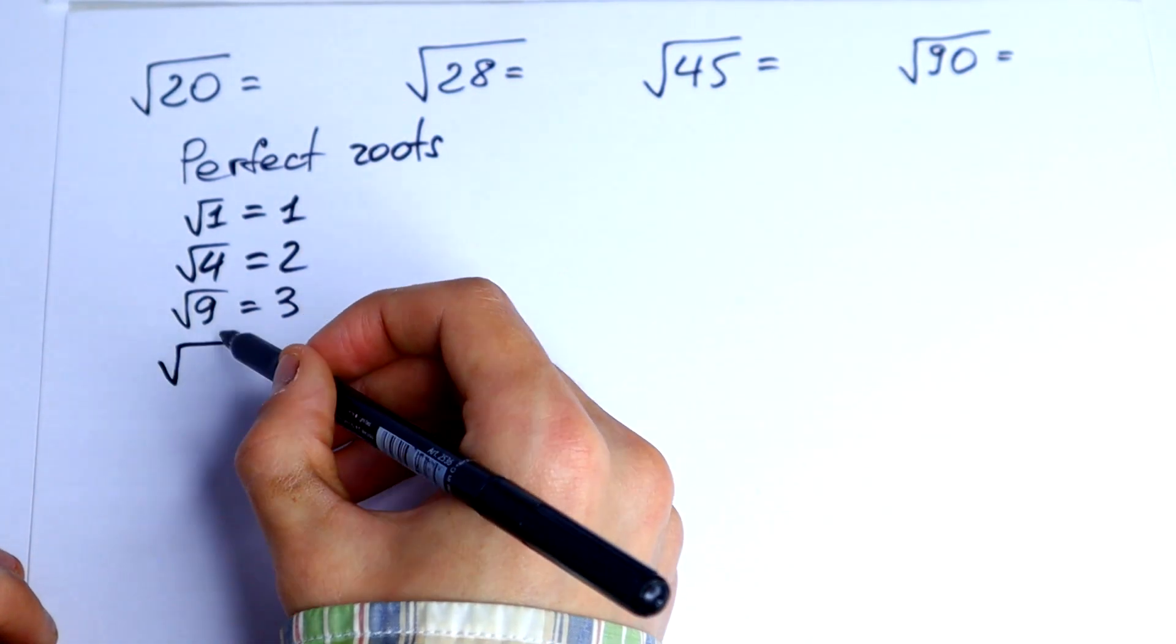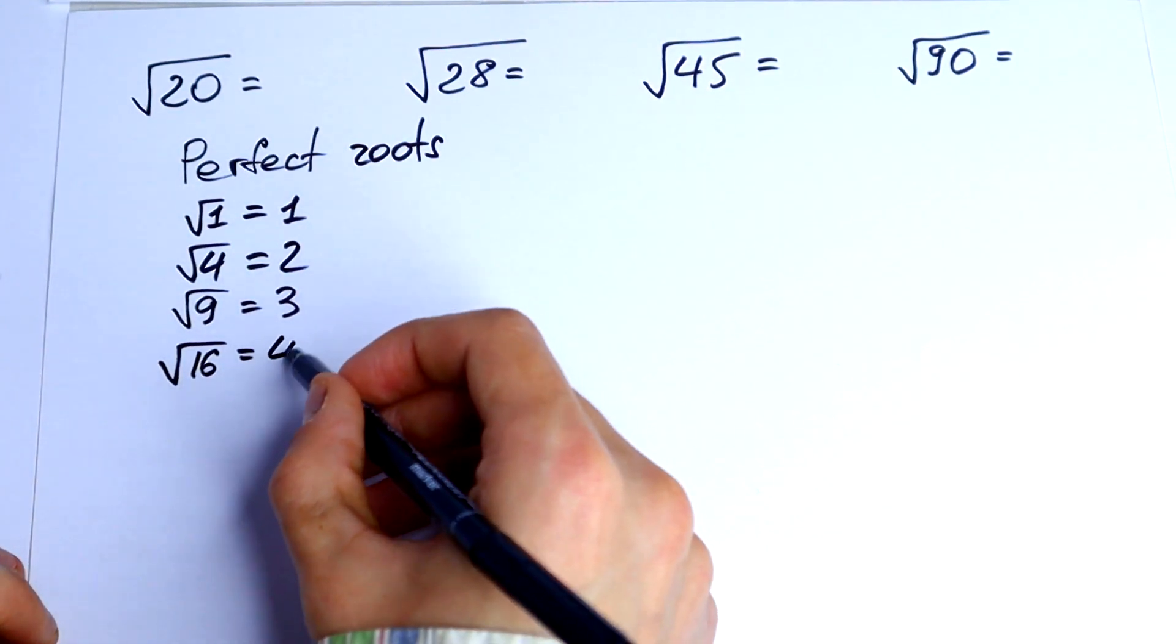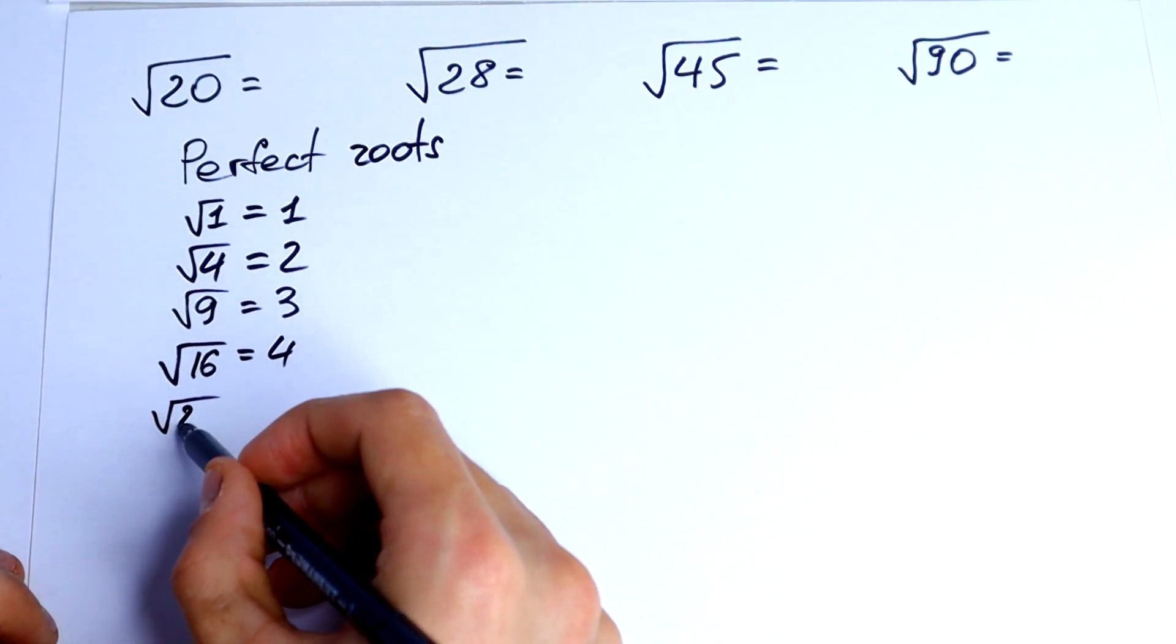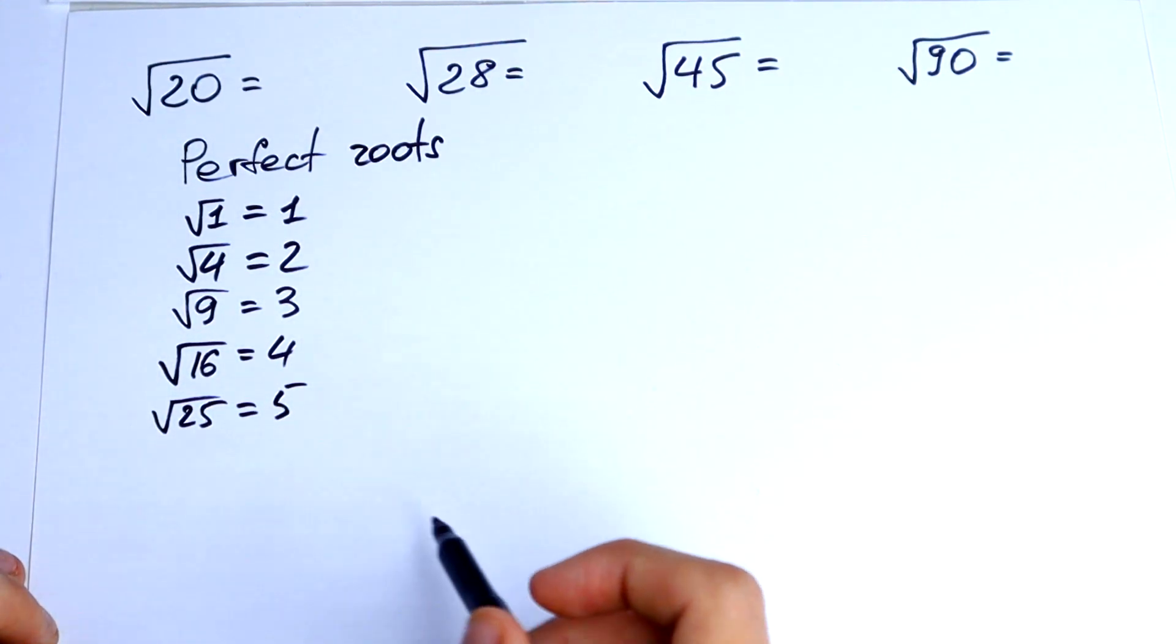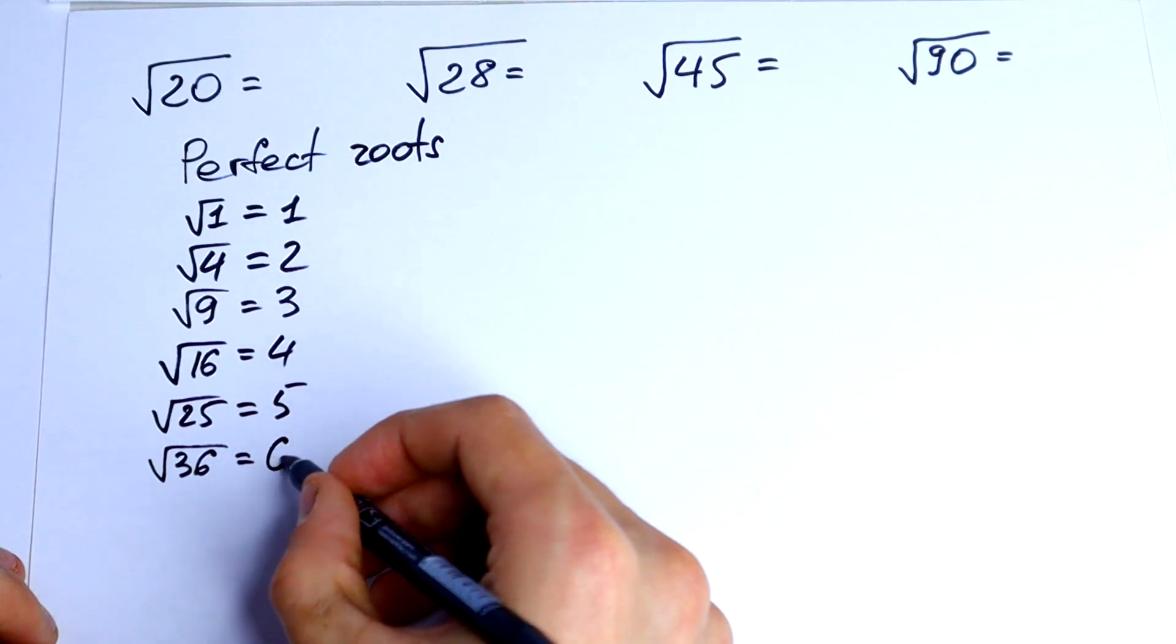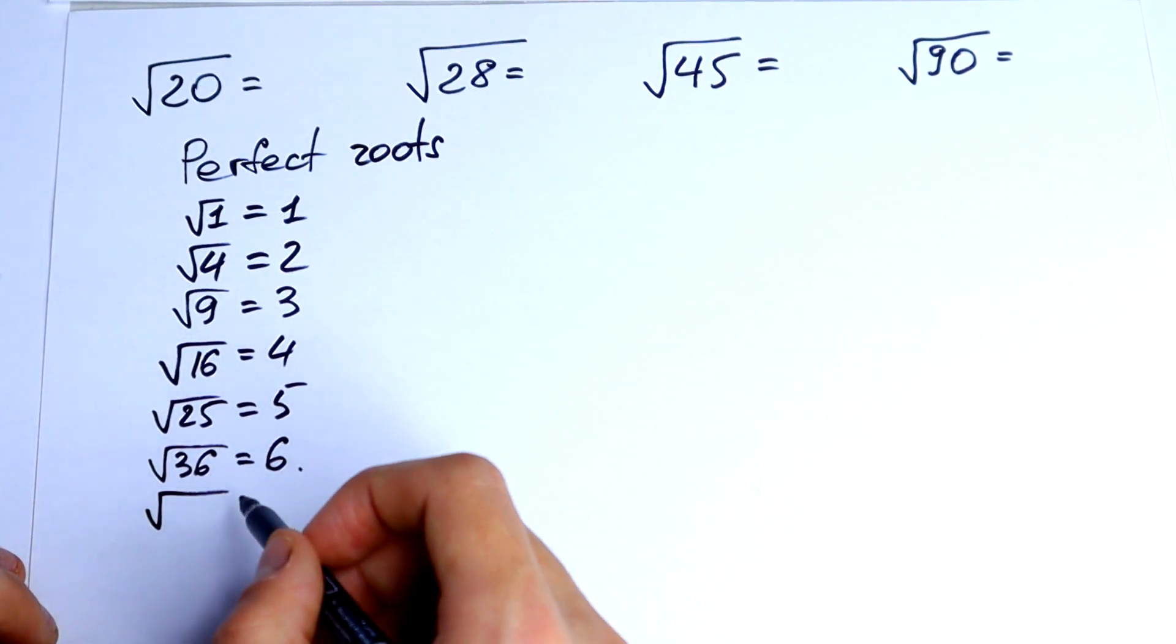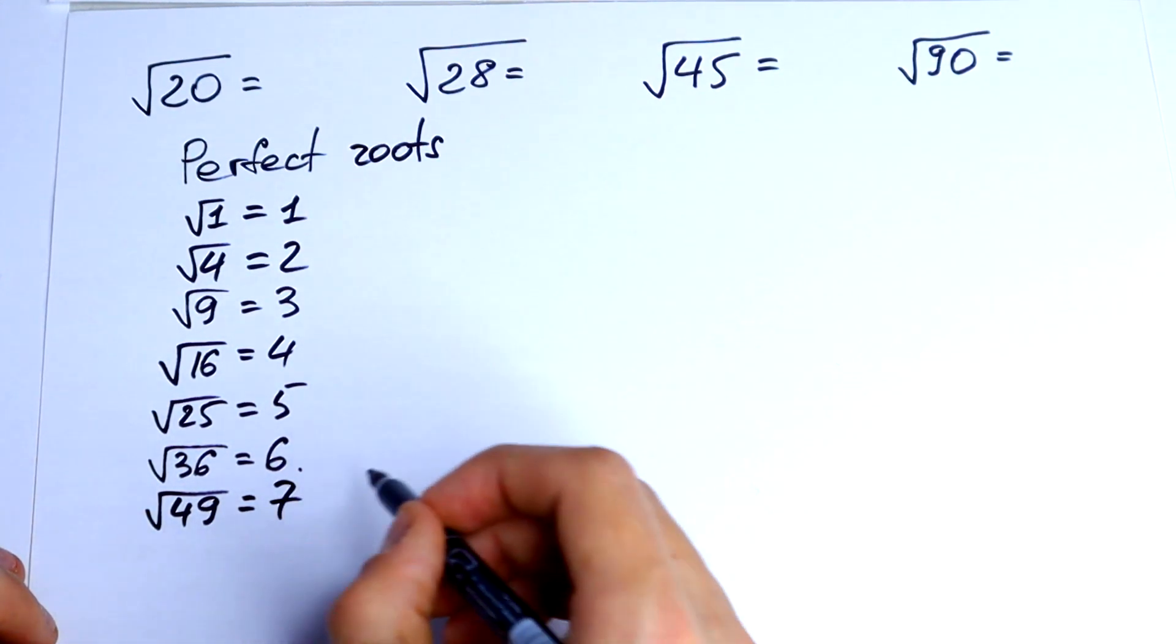The next one, square root of 25 equals 5. Square root of 36 equals 6. Square root of 49 equals 7.